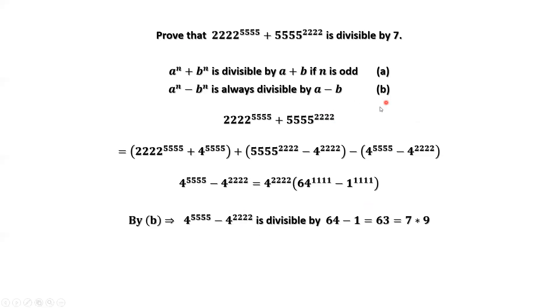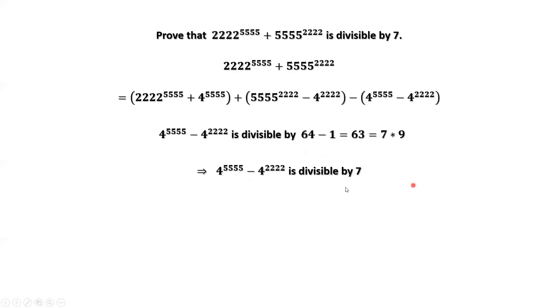We can use result b again here from this part. A equals 64, b is 1. 64 minus 1 is 63, which is 7 times 9. Therefore, the last group is divisible by 7.